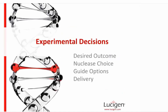Next we'll talk about experimental decisions. When you're starting out there are a number of things to think about: first, what your desired outcome is, then the nuclease choice, guide options, and how you're going to deliver the CRISPR components.